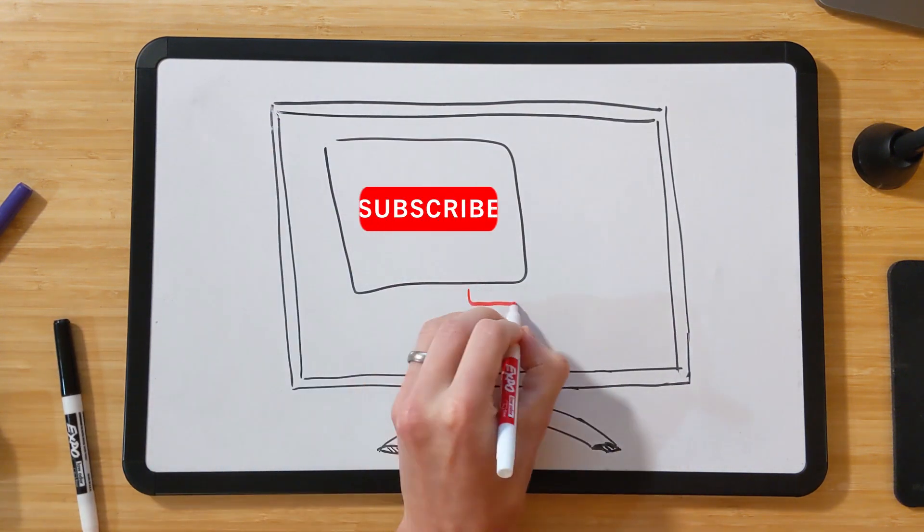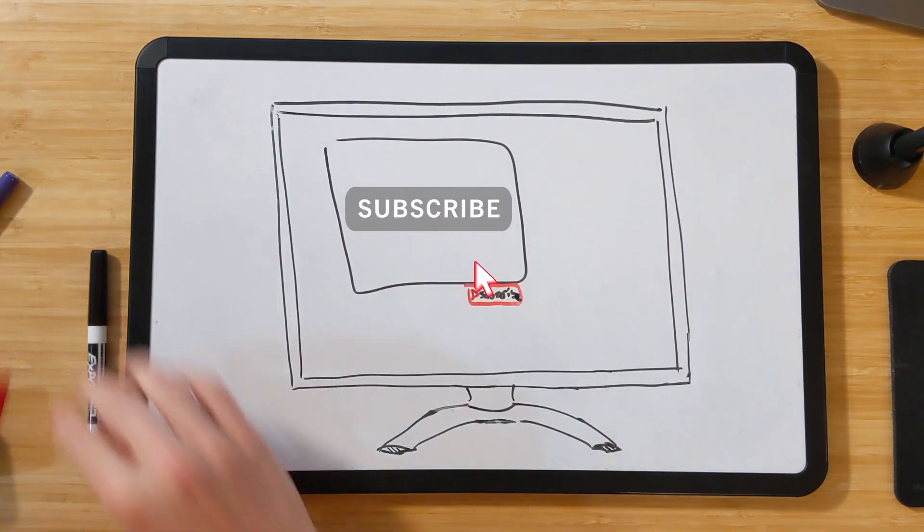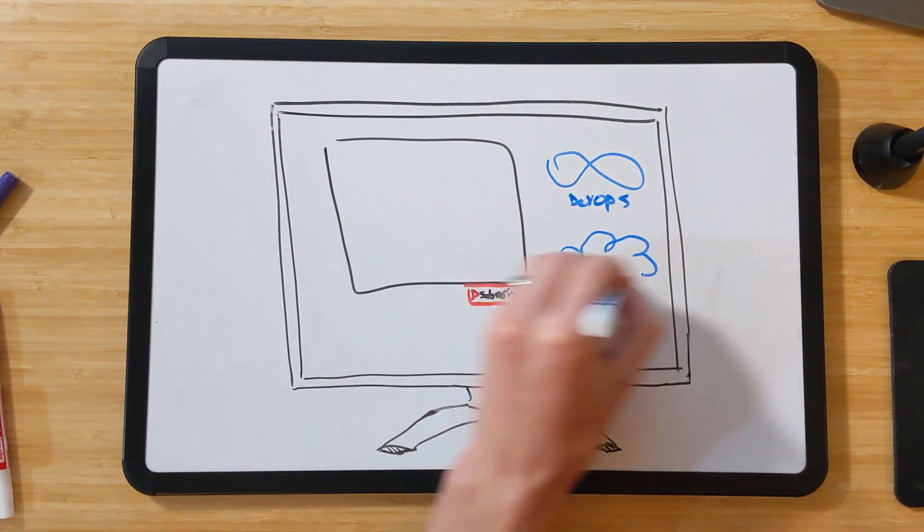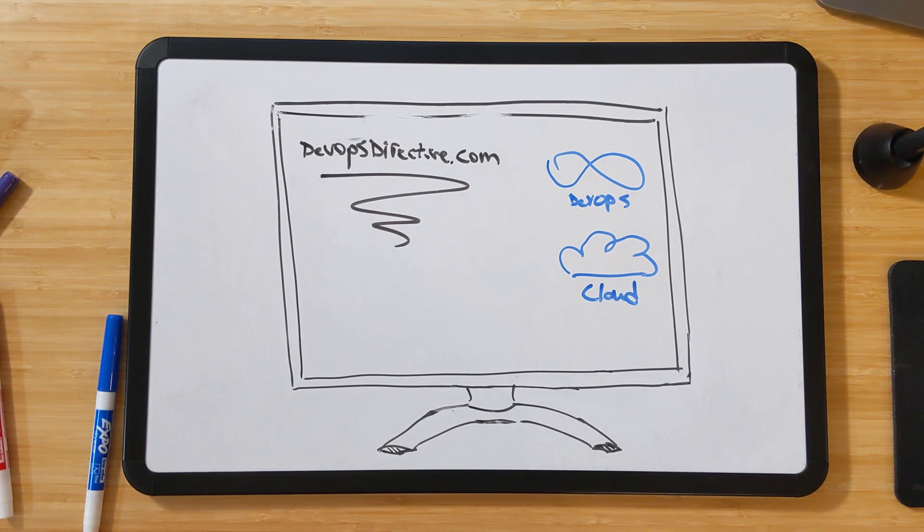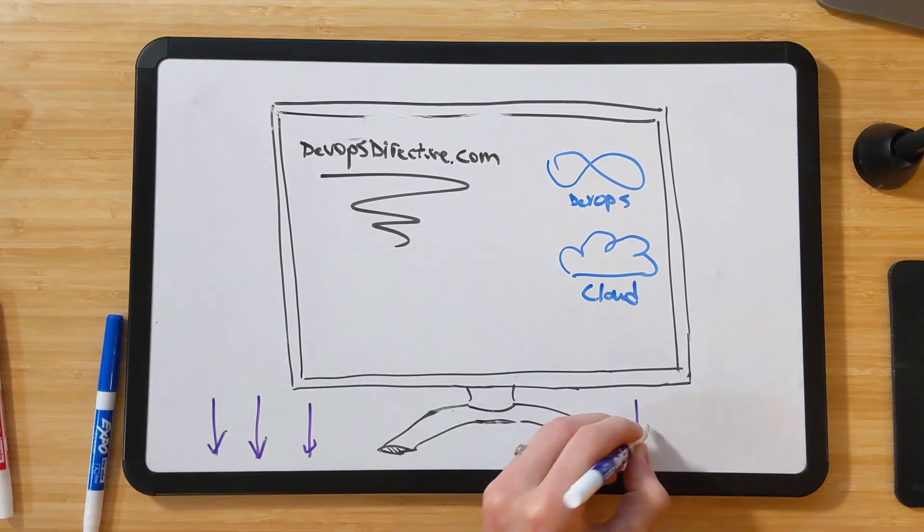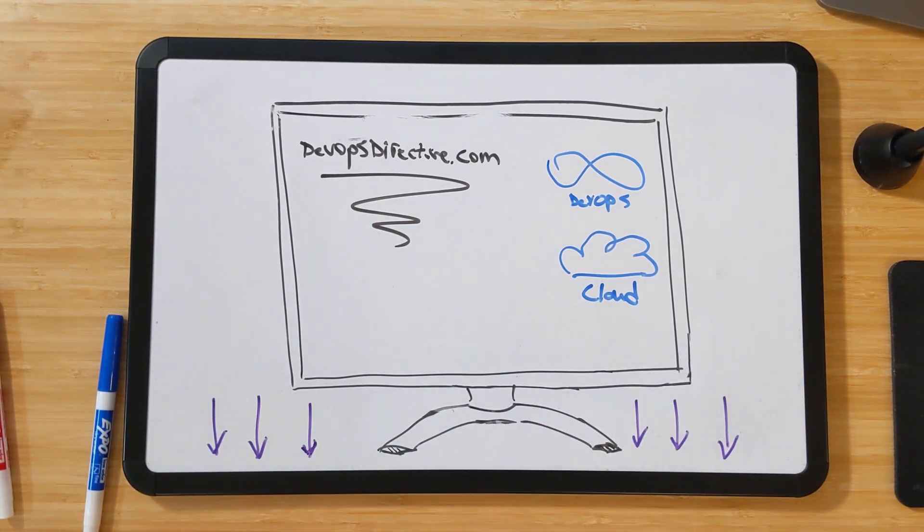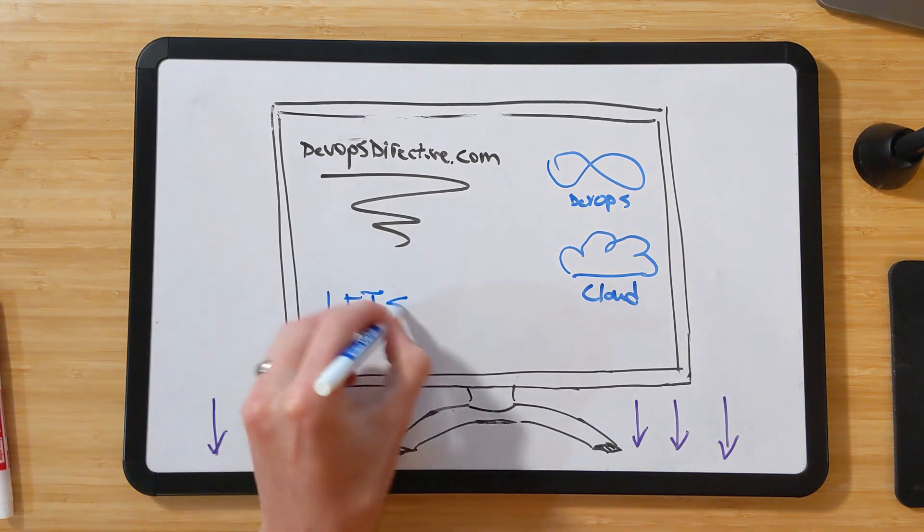If you're new here, consider subscribing and check out all of the DevOps and Cloud Infrastructure content on this channel, as well as at DevOpsDirective.com. If you want to check out the original paper, and I suggest that you do, I've included a link in the description below. Without further ado, let's get into it.